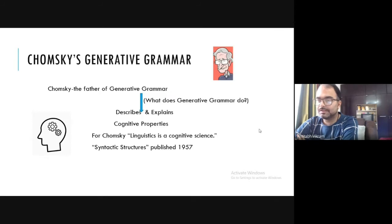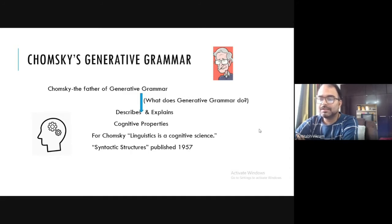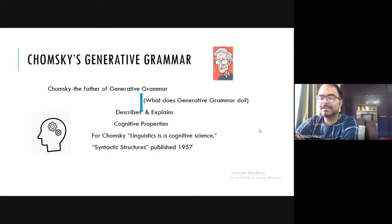How is generative grammar different from other grammars? First, generative grammar describes and explains cognitive properties that are present in a language. Linguistics is considered a cognitive science — how language is constructed in our mind, and what cognitive properties are responsible for the acquisition of a language. That is basically the part of generative grammar.